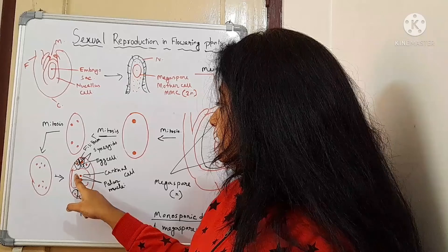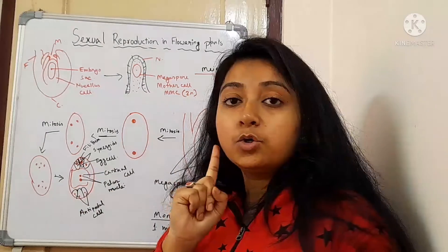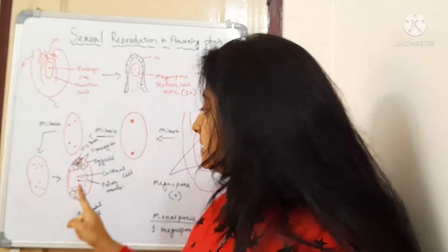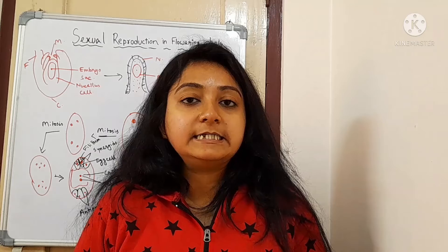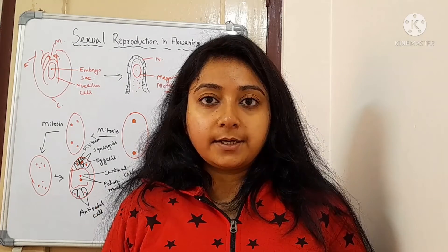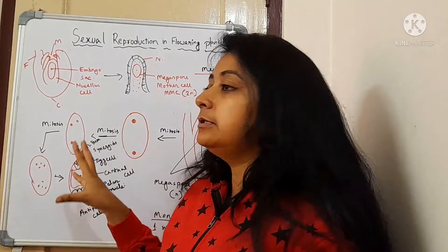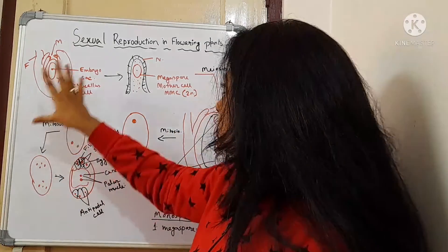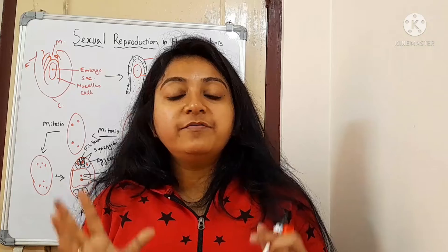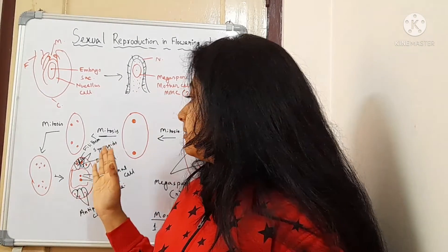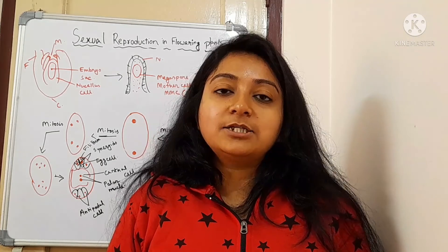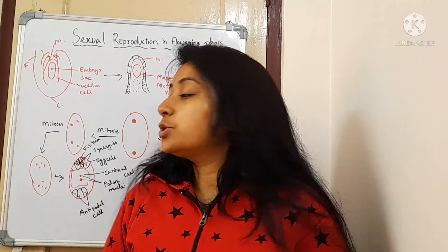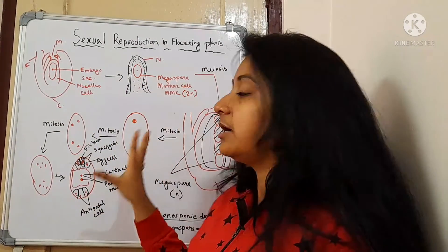In this mature embryo sac, there are only seven cells present but eight nuclei — because the central cell contains two polar nuclei. This structure is therefore referred to as the seven-celled, eight-nucleate stage of the embryo sac. It is now completely ready for the events of fertilization. The production of megaspores from the megaspore mother cell is called the process of megasporogenesis.